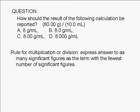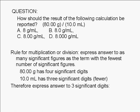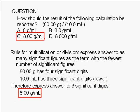Let's examine the terms given here. 80.00 grams has 4 significant digits. 10.0 milliliters has 3 significant digits. 3 is less than 4. Therefore, the answer should be expressed to only 3 significant digits. The correct answer is 8.00 grams per milliliter.